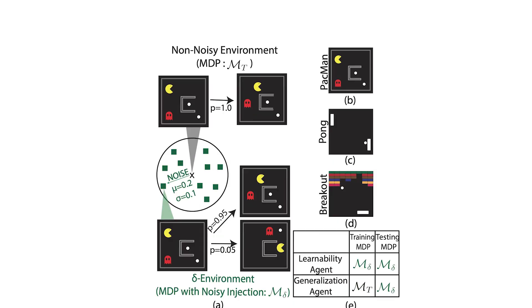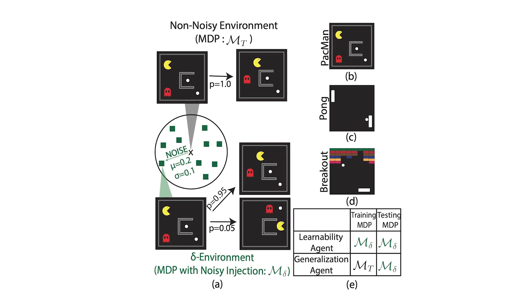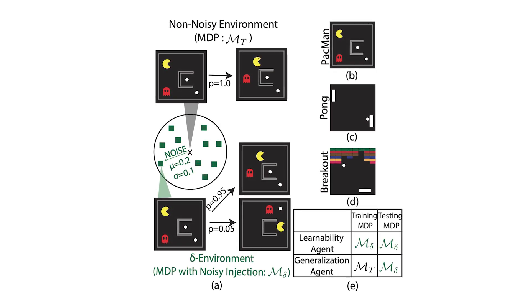It's even more interesting that this generalization gap does not exist for humans, and this is what we wanted to investigate in this project. In order to investigate generalization, we created different variations of environments and used the very common benchmark, the Atari games. We took Pac-Man, for instance, and created different variations by adding noise to what is called the transition function.